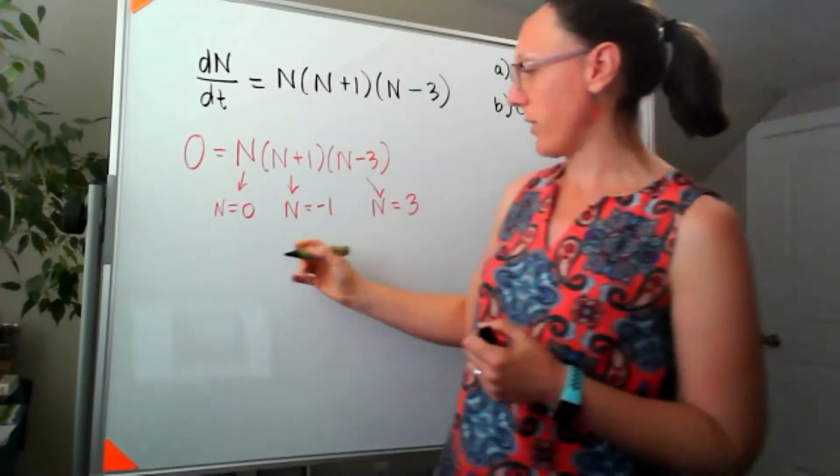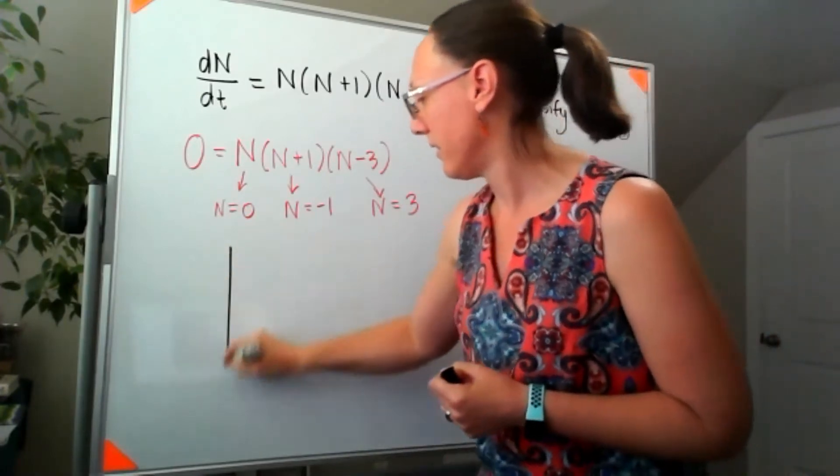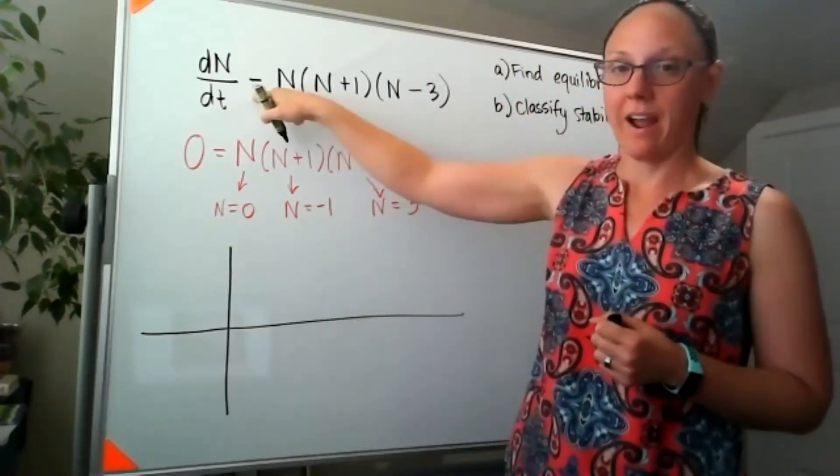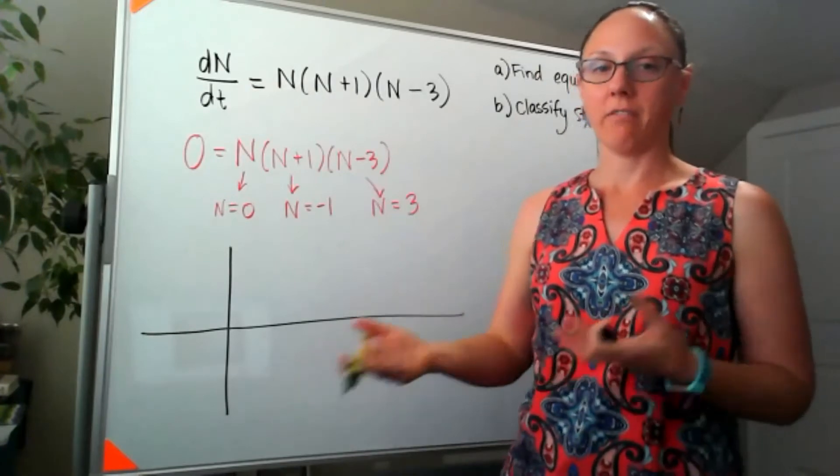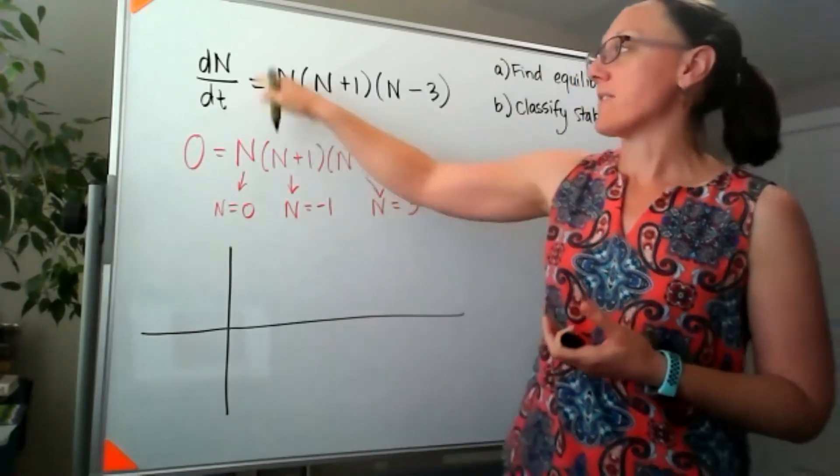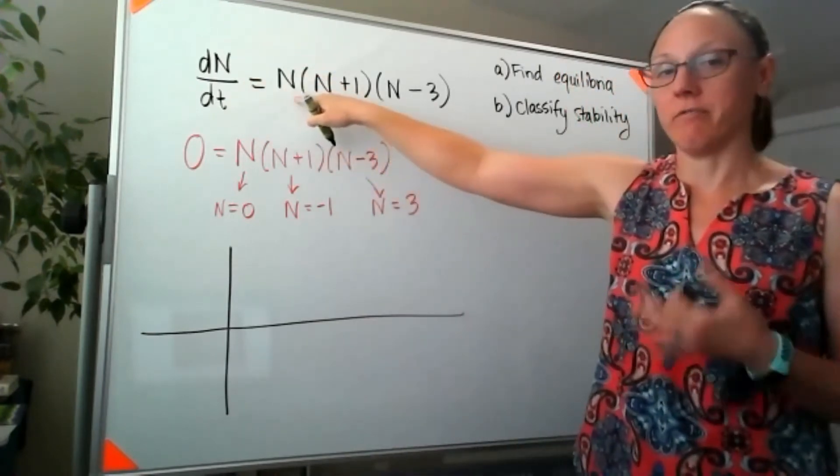To get my phase plane going, I need to sketch this graph, but we're not sketching n versus t or even dN/dt versus t because our derivative is a function of the value of n.